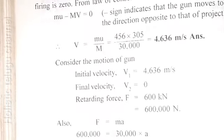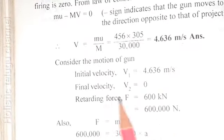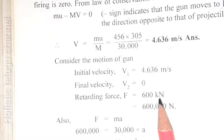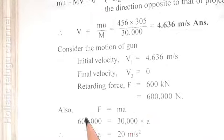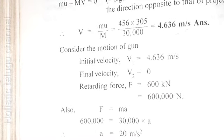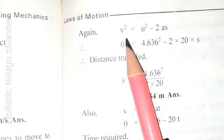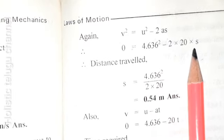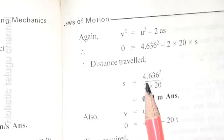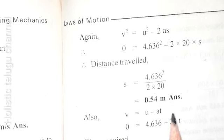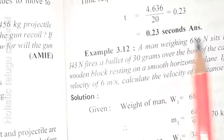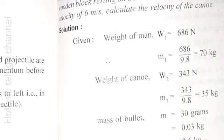Initial velocity V1 equals V2 equals 0. The restraining force F equals 600 kN. Using F equals MA, and distance travelled with V equals U minus AT, time equals 4.636 divided by 20 equals 0.23 seconds.